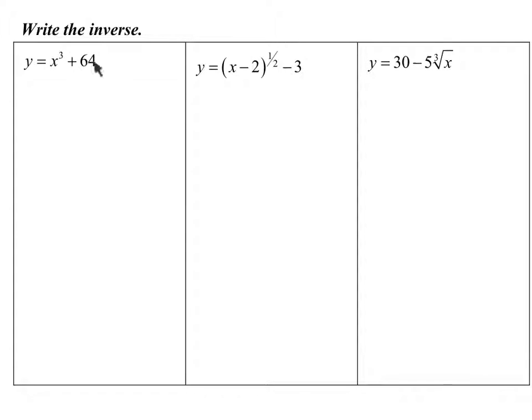To find the inverse of this, the first step on all inverses is to simply switch x and y. So the first step is to just write it with x and y flip-flopped. But then what you want to do is you now have to solve to get y by itself. That's your next step. Because if you want to graph it, don't you want y by itself?